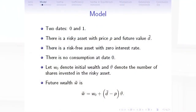There are two dates — this is a static model, zero and one. There's a risky asset with a price P and future value D-tilde. There's a risk-free asset; we normalize the interest rate to zero, and there's no consumption at date zero. W-naught is the initial wealth, theta is the number of shares invested in the risky asset, and W-tilde is the future wealth. The budget constraint is simply: how much you have today plus the price change times how much you invest in the asset.